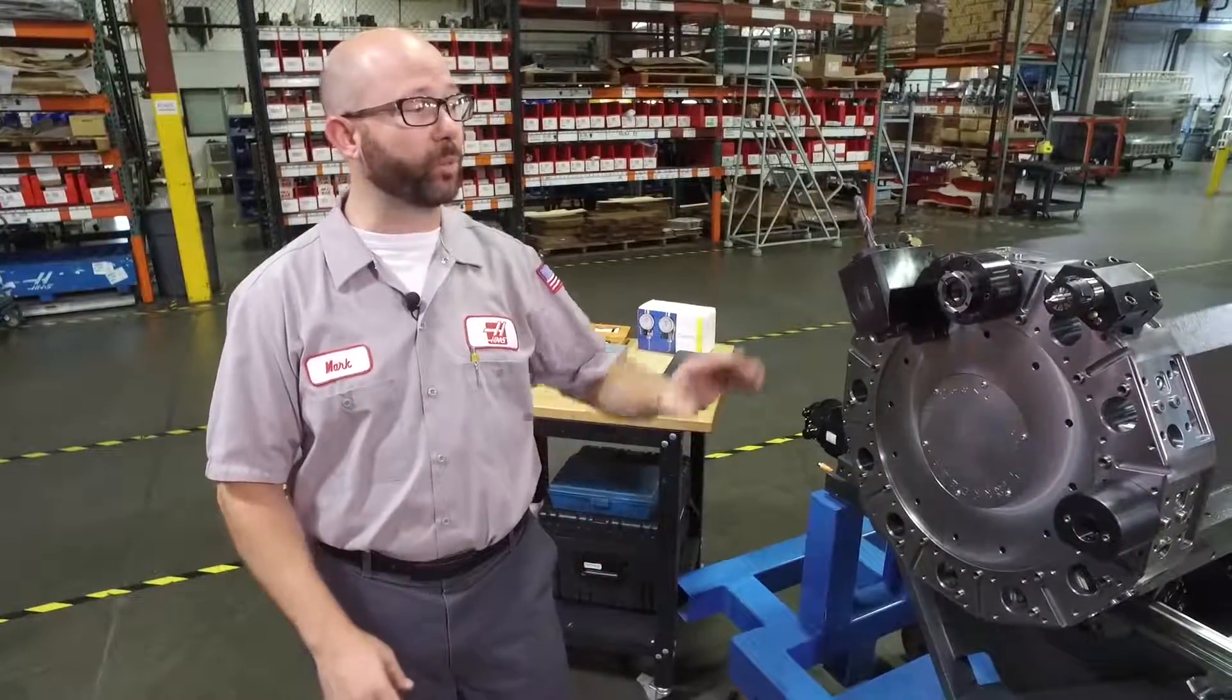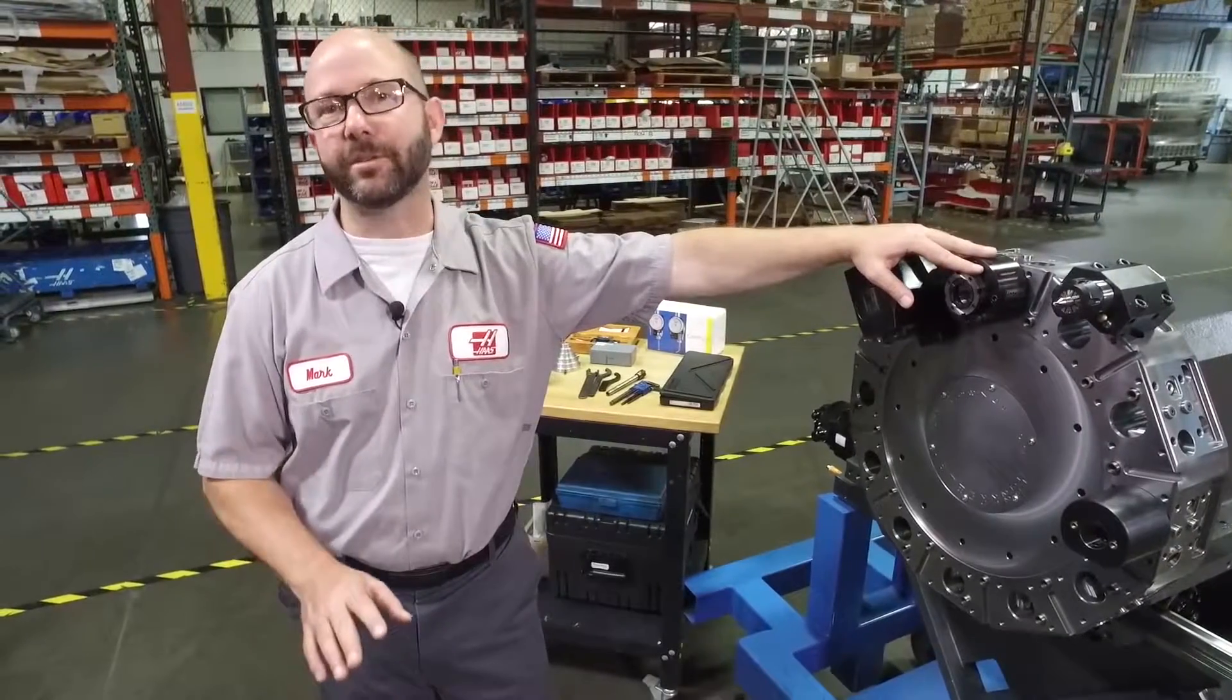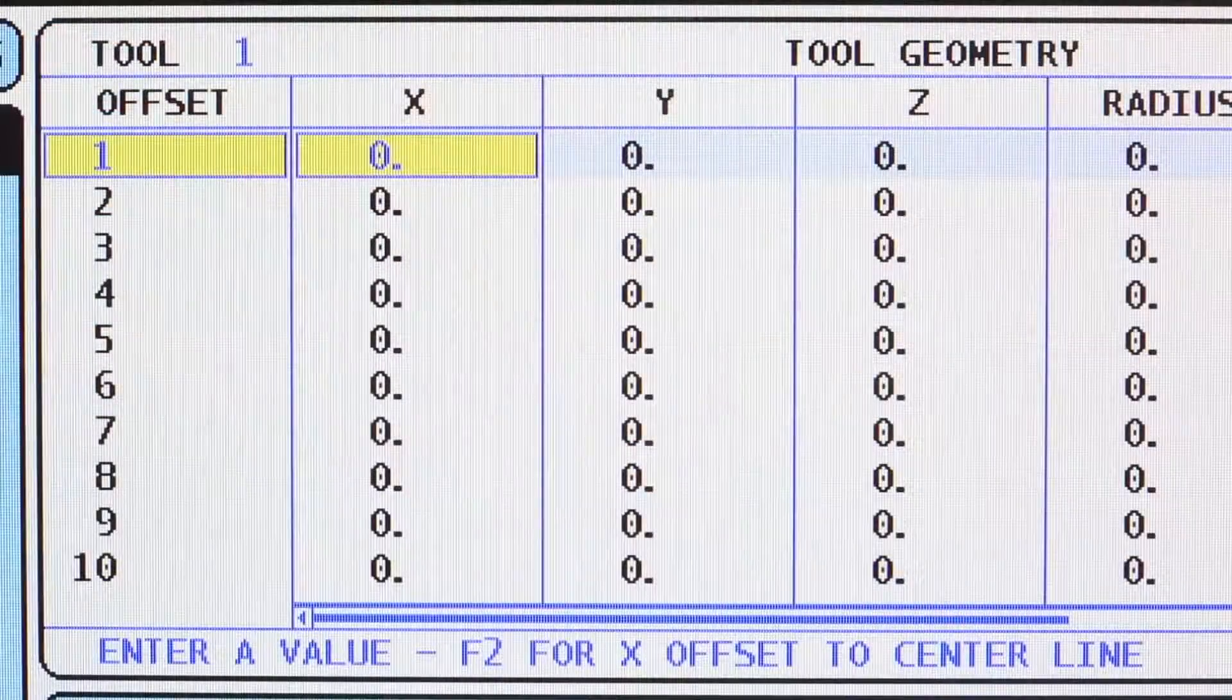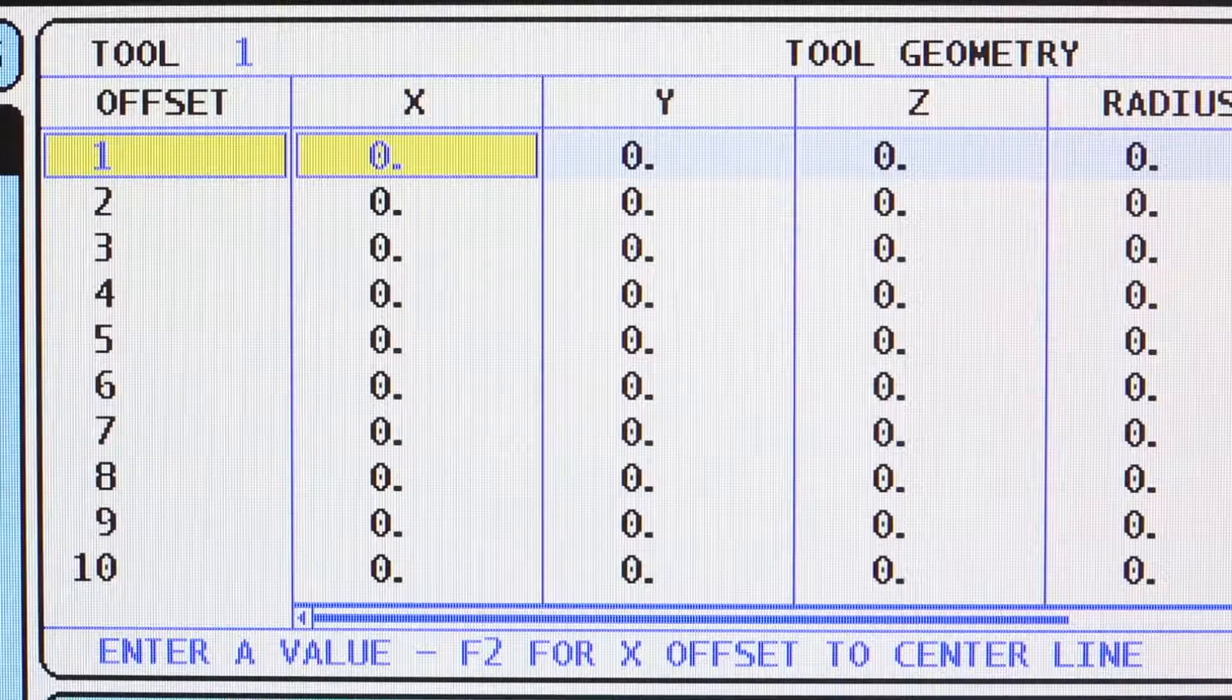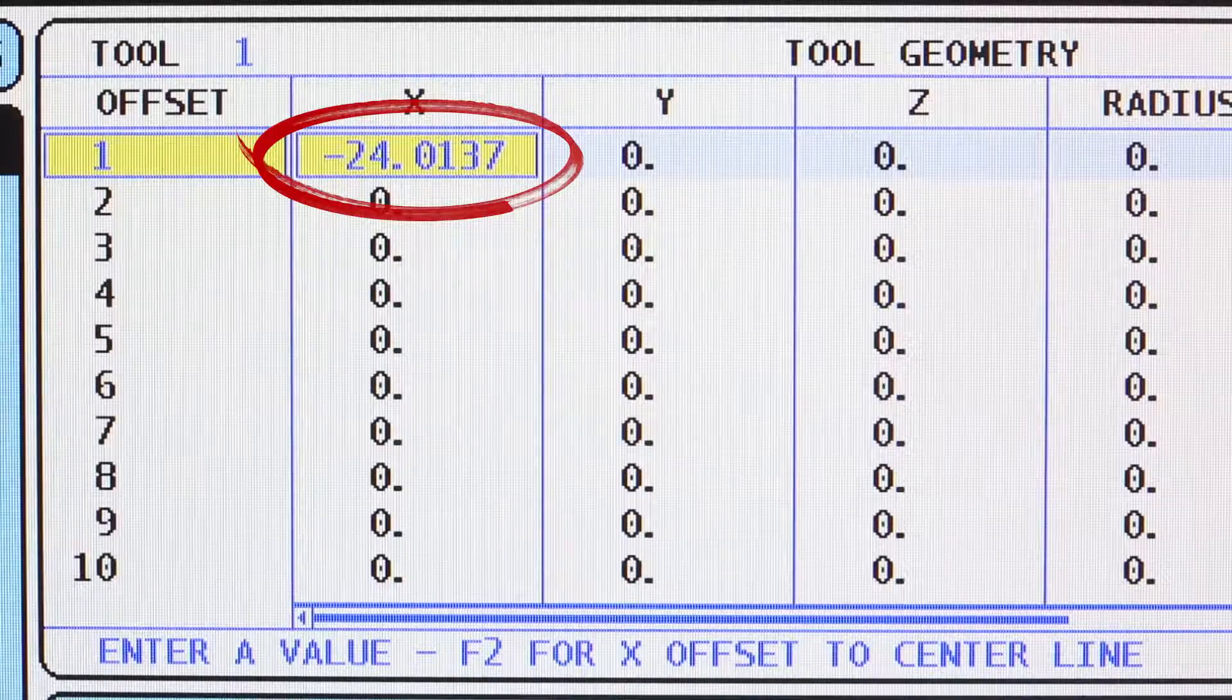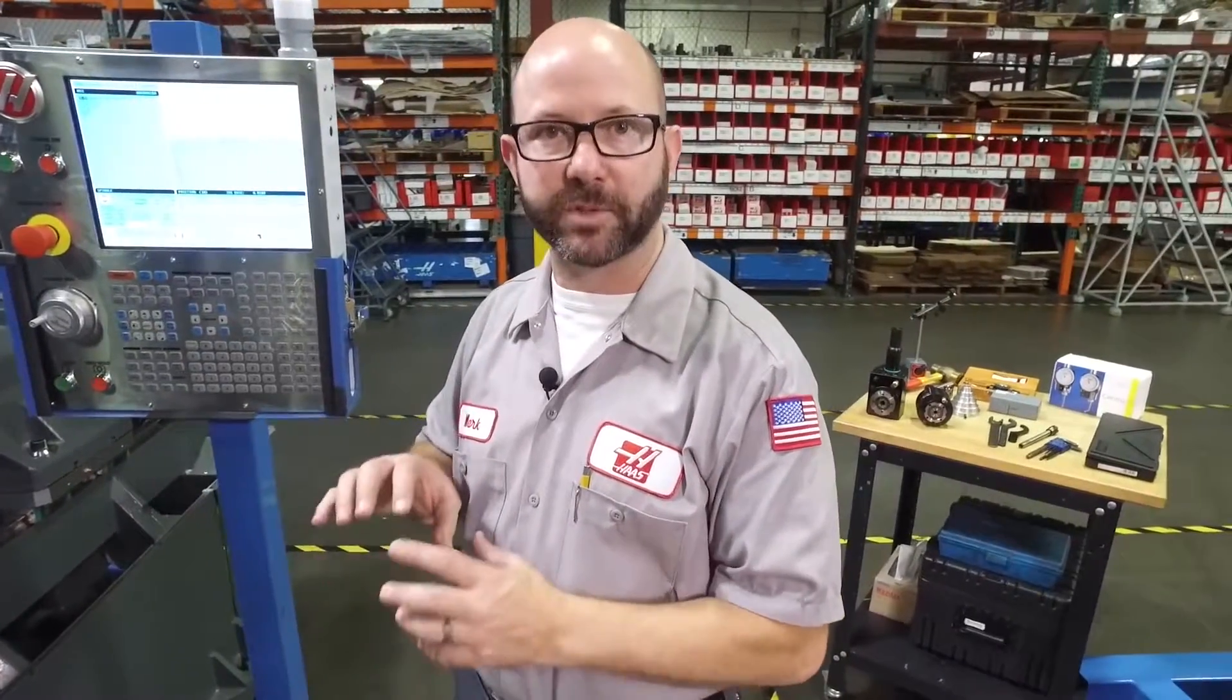Now our axial tool holders are really easy to set up. In fact from the factory really all we should have to do is go to our offset page, highlight the tool that we're trying to line up and press the F2 key. That's going to write the X axis spindle center line to our offset page for that tool.